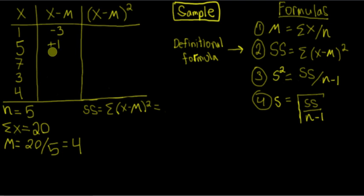Seven minus four is positive three. Three minus four is negative one. Four minus four is zero.